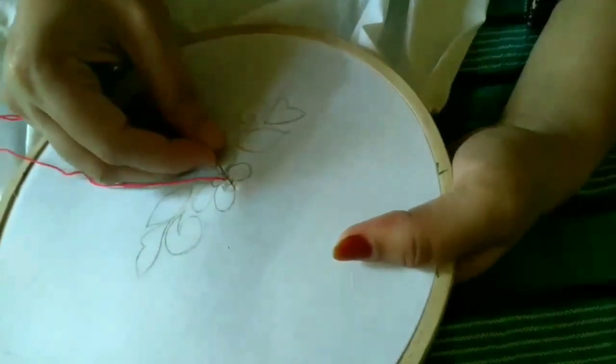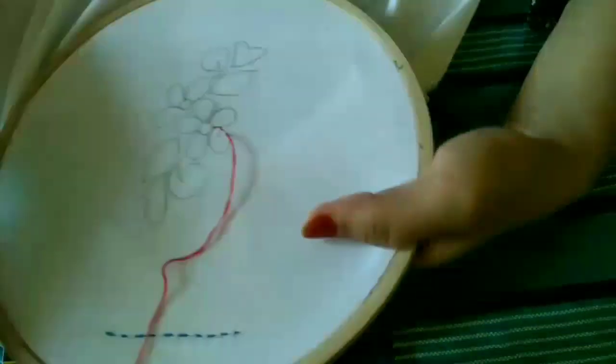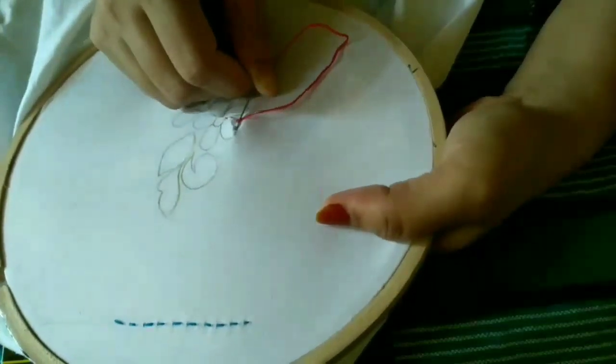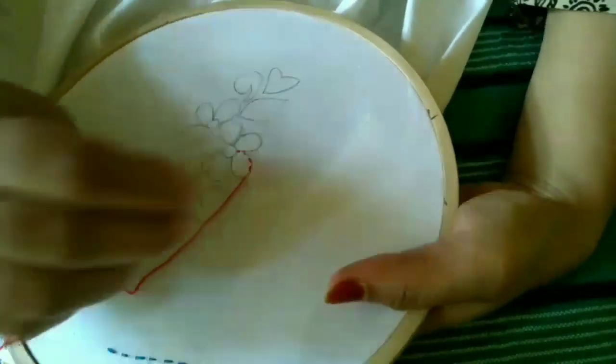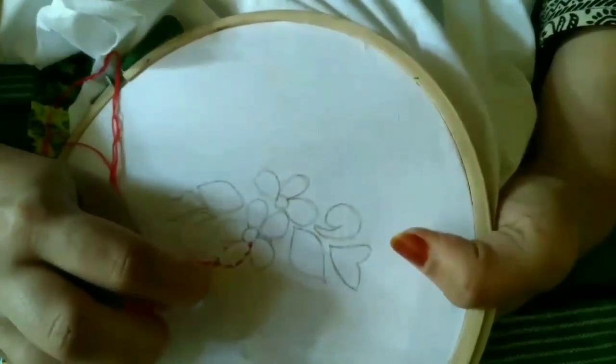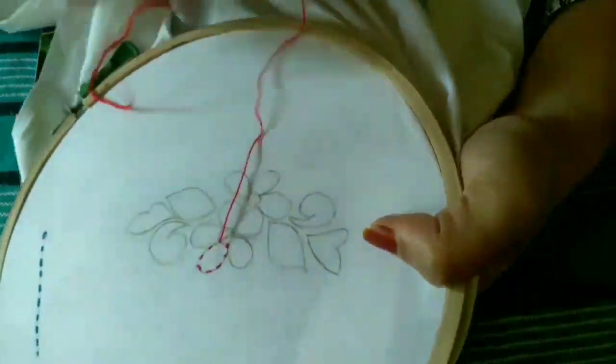I will make this running stitch for the flower. I will do this work for the flower. This is the design material.